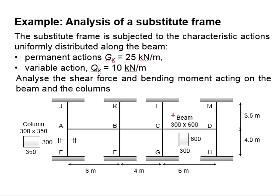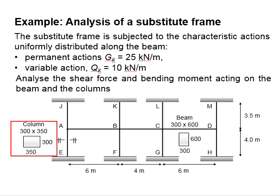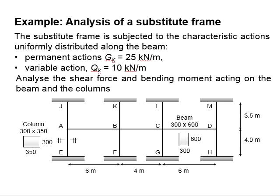The beam has a section of 300 times 600, and the column has a section of 350 times 300. The upper column is 3.5 meters and the lower column is 4 meters. The effective length of the beam is 6 meters, 4 meters, and 6 meters.